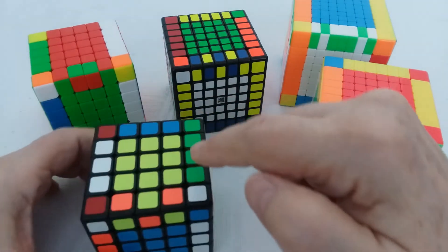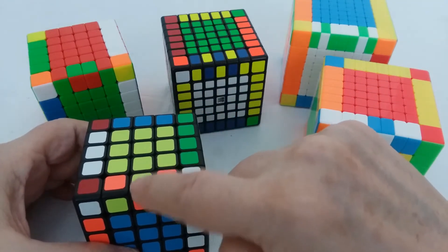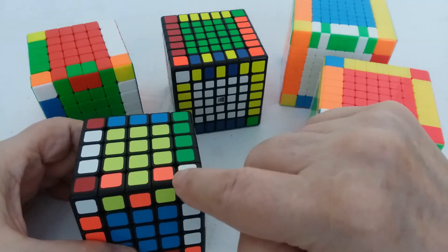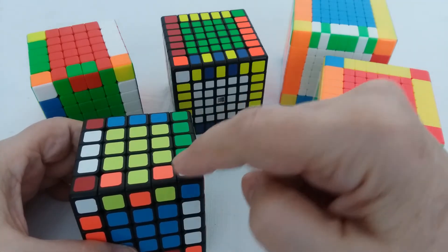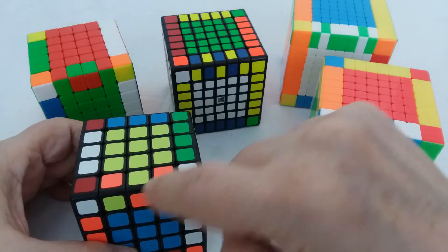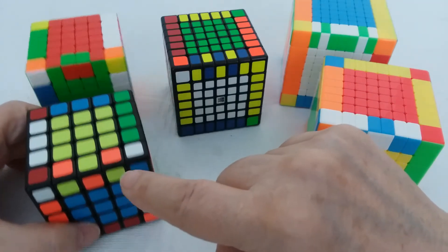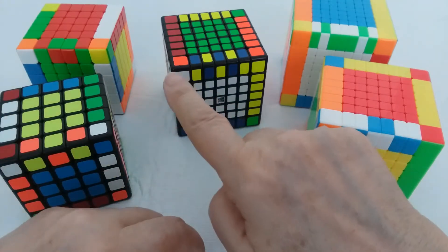On an odd cube you only have one static center, so in this case the pieces that are flipped that we're going to unflip are these two end pieces. We're not going to unflip the center because it stays the same.